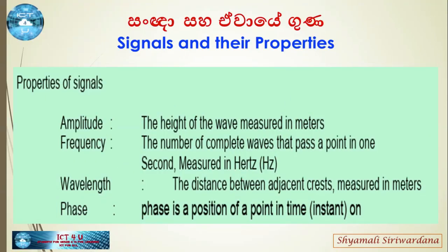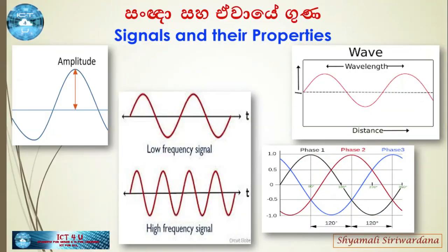The properties of signals: first, amplitude — the height of a wave, measured in meters. Frequency — the number of complete waves that pass a point in one second, measured in Hertz. Wavelength — the distance between two crests, measured in meters. Phase — basically, the position of a point in time on a wave. Here are examples of amplitude, frequency, wavelength, and phase.